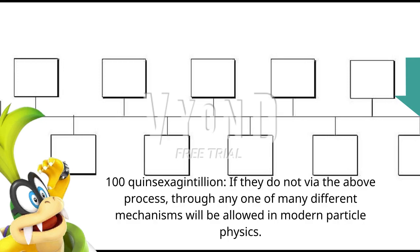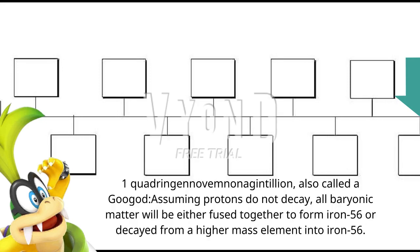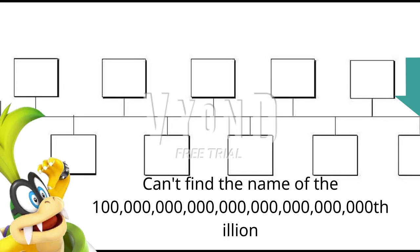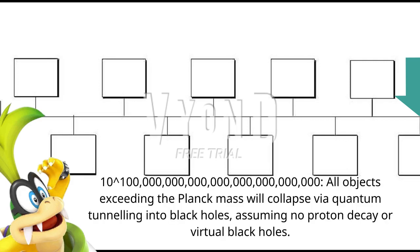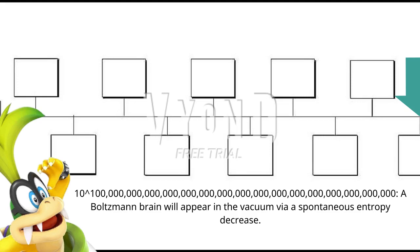100 Quattrigentillion: if protons do not decay via the above process, through any one of many different mechanisms allowed in modern particle physics. 1 Quattrigentillion, also called a Googol, assuming protons do not decay: all baryonic matter will be either fused together to form iron-56 or decayed from a higher mass element into iron-56. 10 Quattrigentillion: we can't find the name of the 100 septillion-illion name, so the text is in scientific notation — 10 to the 100 septillion. All objects exceeding the Planck mass will collapse via quantum tunneling into black holes.